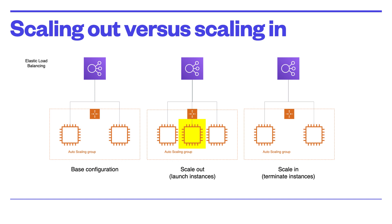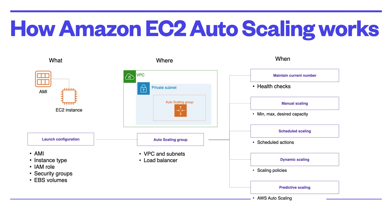To launch EC2 instances, an auto scaling group uses a launch configuration or template, which specifies the AMI, instance type, IAM role, security group, and EBS volumes to be used. You define the minimum and maximum number of instances and the desired capacity of your auto scaling group, then launch it into a subnet within your VPC. Amazon EC2 Auto Scaling integrates with Elastic Load Balancing, allowing you to attach one or more load balancers to an existing auto scaling group. After attaching a load balancer, it automatically registers the instances in the group and distributes incoming traffic across them.